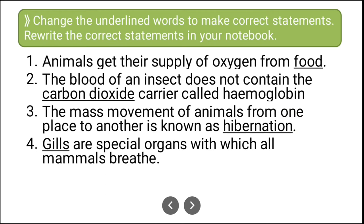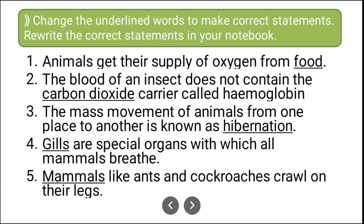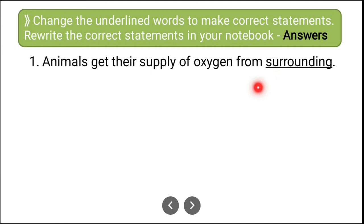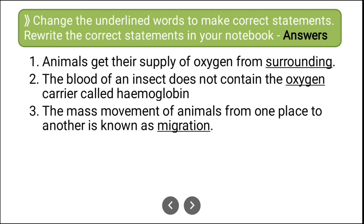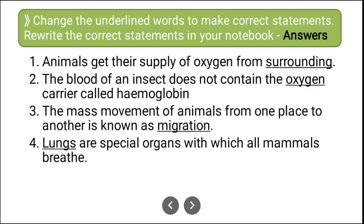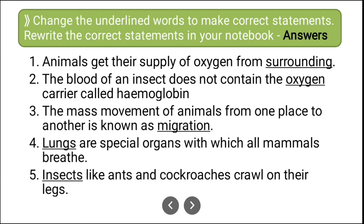The corrections are: (1) Animals get their supply of oxygen from surroundings — not food. (2) Blood of an insect does not contain oxygen carrier called hemoglobin — not carbon dioxide. (3) The mass movement of animals from one place to another is known as migration — not hibernation. (4) Lungs are the special organs with which mammals breathe — not gills. (5) Insects like ants and cockroaches crawl on their legs — not mammals, as ants and cockroaches are insects.